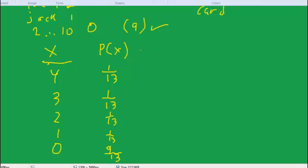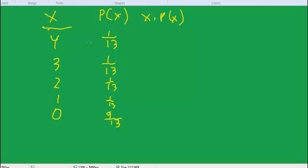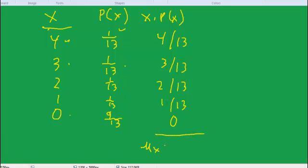And the way we compute the average is we multiply x times P(x), and then we add them up when we get to the bottom. So x times P(x) will be 4 over 13. And for this one, we get 3 over 13. Not too shockingly here, we'll get 2 over 13. We'll get 1 over 13. And what do we get here? We get 0 times 9 out of 13, so 0. And now to get the average, we add all of these up. And that will be our mu of x. So 4 plus 3 plus 2 plus 1 equals 10 thirteenths is mu of x.